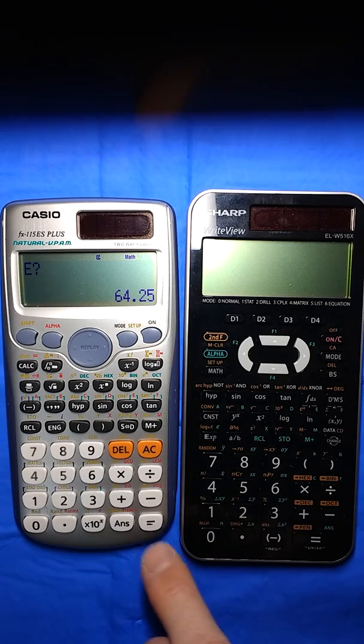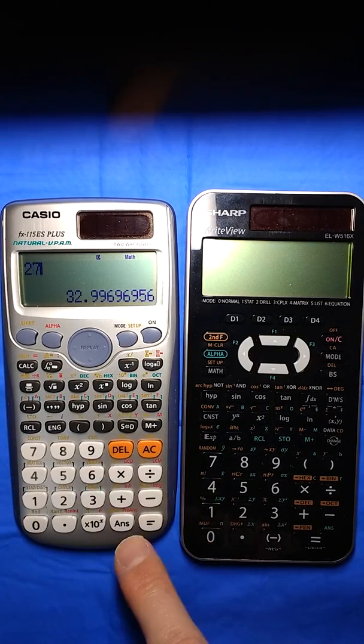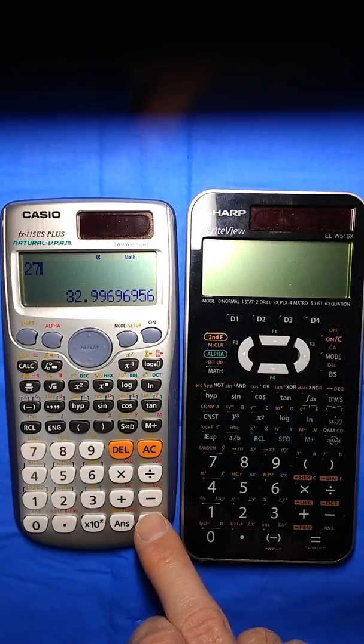Okay, E is 64.25, so I can just hit equals. B, I'm going to use 27 for my initial velocity, or sorry, my velocity.